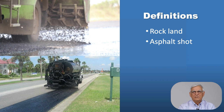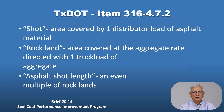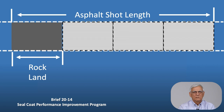There are a couple of definitions contained in the specification. One is for rock lands, the other is for asphalt shot. A shot is the area covered by one distributor load of asphalt material. The rock land is the area covered at the aggregate rate directed by the engineer with one truck load of aggregate. The asphalt shot length should be an even multiple of rock lands. As shown in the pictorial, the rock land is one fourth of the total asphalt shot length.